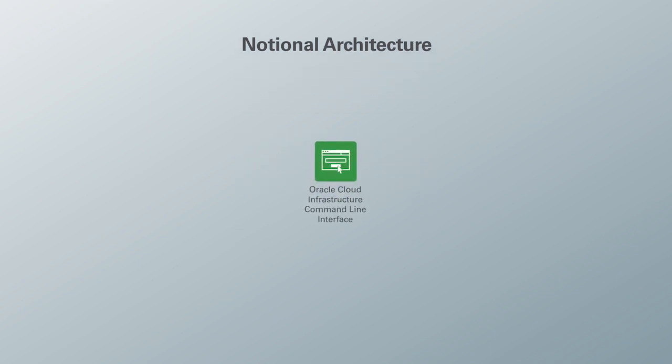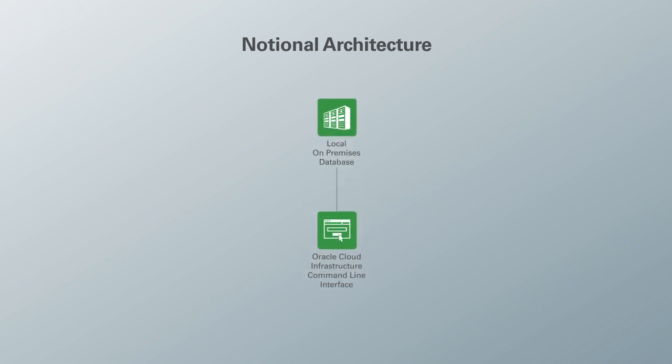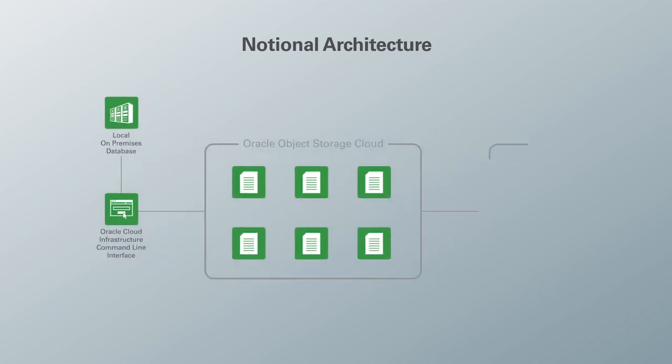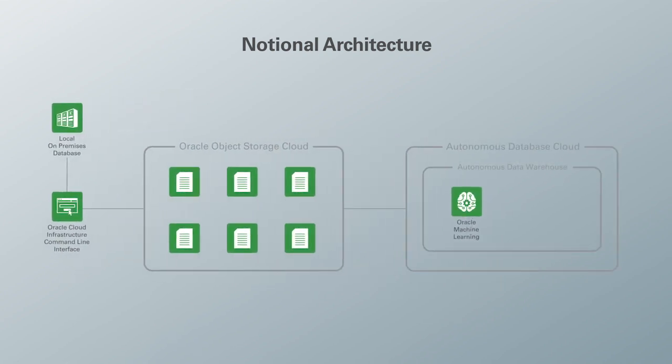Now let me show you how we can transfer data stored in a bunch of flat files on a local machine to a table in an Autonomous Data Warehouse instance. We are using Oracle Object Store as our storage environment on the cloud. First, I'm going to use Oracle Cloud Infrastructure Command Line Interface to move all the files from my local machine to the object store. Then, I'm going to use the Oracle Machine Learning tool to transfer data in these files to a table in the Autonomous Data Warehouse instance.